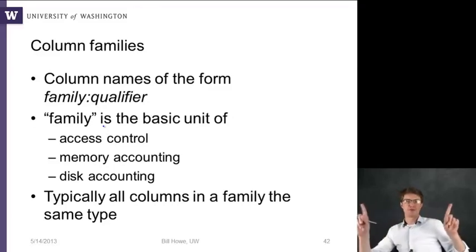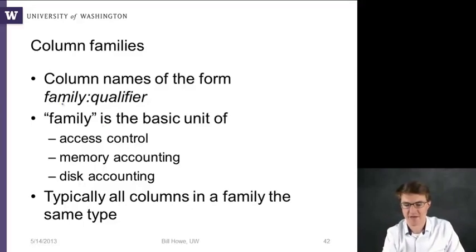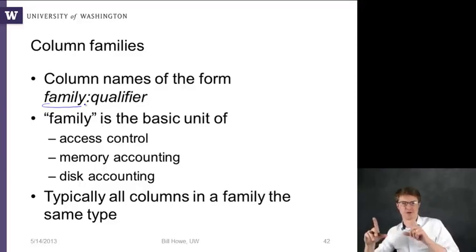So within a single table, you can have these groups of columns called column families. And the column names have the family right in there as a qualifier. And this family is the basic unit of access control, so you can provide permissions on a group of columns. Memory accounting in that they're sort of allocated as a unit in memory. And then disk accounting, so they're moved around on disk as a unit as well.